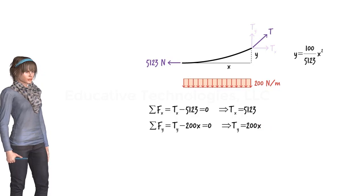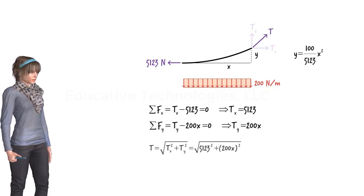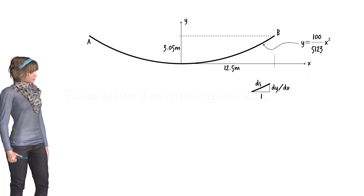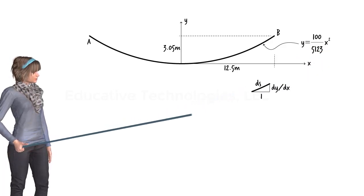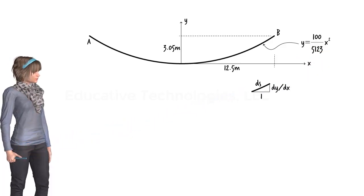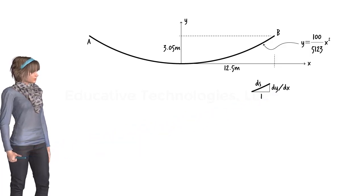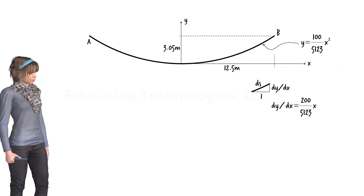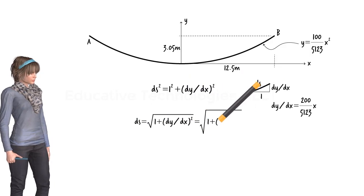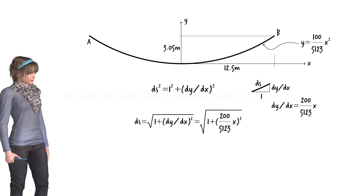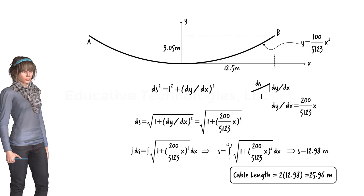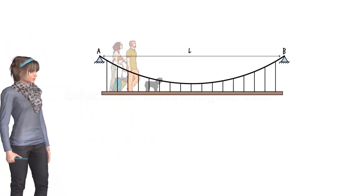Let's assume that the total weight of the bridge deck is 10 kN. Since this weight is to be supported by the two cables, each cable must carry a load of 5 kN. Given that the bridge is 25 metres in length, the uniformly distributed load acting on each cable equals 200 N per metre. With this in mind, we want to analyse this cable system under a uniformly distributed load of 200 N per metre.